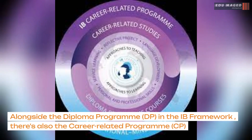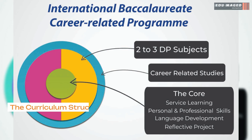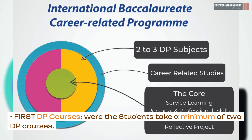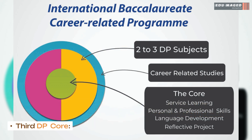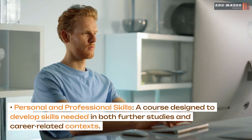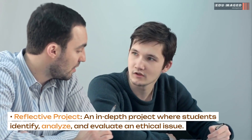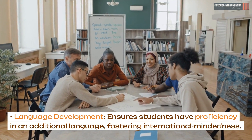Alongside the Diploma Programme in the IB framework, there's also the Career Related Programme, CP, offered for ages 16 to 19 years. The CP curriculum consists of three parts: first, DP courses, where students take a minimum of two DP courses; second, Career Related Study, a vocational or career-related course providing practical knowledge and skills in a specific field; and third, the CP core, which includes Personal and Professional Skills, a course developing skills for further studies and career contexts; Service Learning, projects involving community service; Reflective Projects, where students identify, analyze, and evaluate an ethical issue; and Language Development, ensuring students have proficiency in an additional language to foster international mindedness.